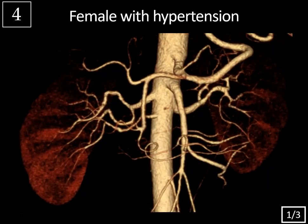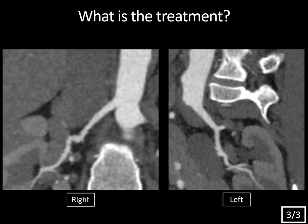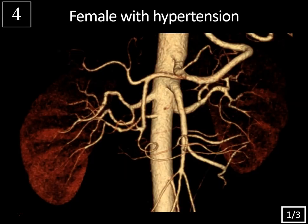Case 4: female with hypertension. This is a 3D volume rendered image of the renal arteries. You can see subtle beading of the renal artery contour, most pronounced at the mid to distal aspect of the right renal artery, with less pronounced beading on the left. Focusing in on the right renal artery, you can see that beaded contour much better with areas of intervening stenosis and dilatation. These are bilateral curved planar reformatted images of the renal arteries. What is the treatment for this condition?